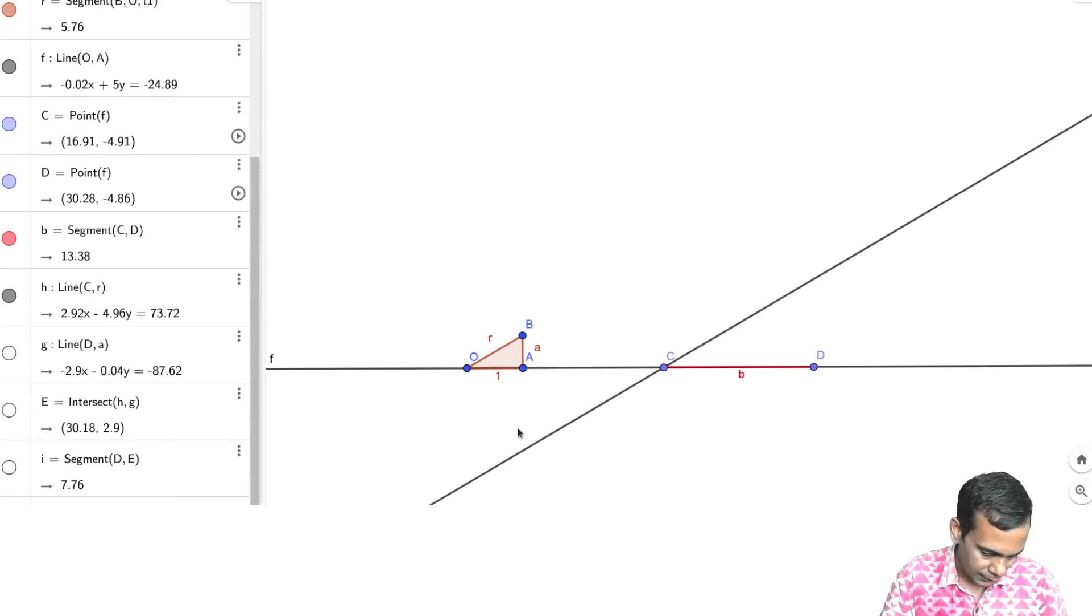So we're drawing something that's parallel to R and passing through C. And then you also draw a line that's parallel to AB but passes through D. So what we have in effect is a triangle that is, so if I call this new point E, the intersection of these two lines, then we have a triangle C, D, E that is similar to the triangle O, A, B.